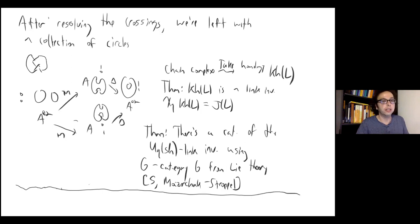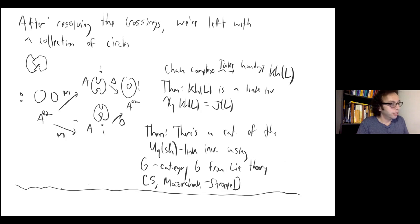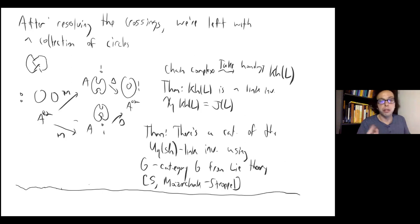To wrap up: this idea of constructing link invariants from various areas of math has brought algebraic geometers, representation theorists, and symplectic geometers together, since there are now many constructions of Khovanov homology. There have been very nice applications — Rasmussen proved a conjecture of Milnor just using Khovanov homology. In recent work with collaborator Yuqi, we categorified the Jones polynomial specialized at a root of unity.